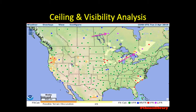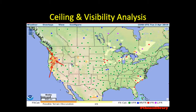No shading on the map depicts VFR or marginal VFR conditions. Pale yellow shading, similar to the area outlined in red here, depicts IFR conditions or ceilings below 1,000 feet AGL and/or visibility below 3 statute miles. The orange shading seen on the west coast depicts ceilings below 200 feet AGL or possible terrain obstruction.